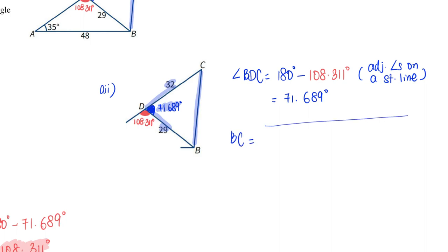BC is the square root of 29 squared plus 32 squared minus 2 times 29 times 32 cosine of 71.689 degrees. This will give me a value of 35.804, or 35.8 meters.